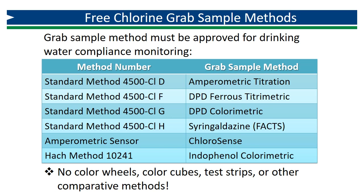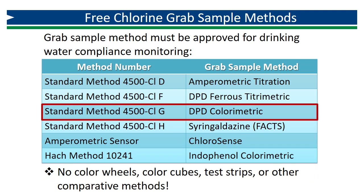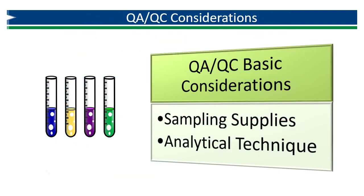The GRAB sample protocol for Method 334.0 requires the use of an EPA-approved method for reporting chlorine data. There are seven methods that meet this criteria; six are approved for use in Pennsylvania and are included in this table. We will focus on Standard Method 4500 CLG, the DPD colorimetric method. The GRAB sample method requirements of Method 334.0 apply to each of these methods; however, the majority of water systems use a DPD colorimetric method that follows 4500 CLG. Since a laboratory QAQC program involves processes intended to assure the quality of lab results, considerations for basic analytical technique and sampling supplies should be part of the QAQC program.